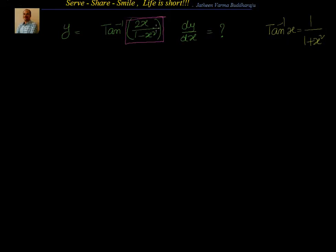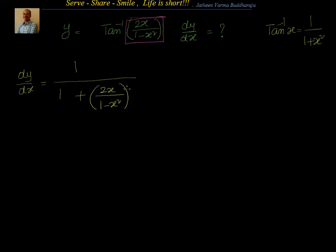What's the value of x here? It's 2x by 1 minus x square. So my first step will be dy by dx equal to 1 by 1 plus x square, where x square is nothing but 2x by 1 minus x square, whole square. Not only that, 2x by 1 minus x square itself is a function which is a quotient of two functions. So I have to find out the derivative of that — that into dy by dx of 2x by 1 minus x square.